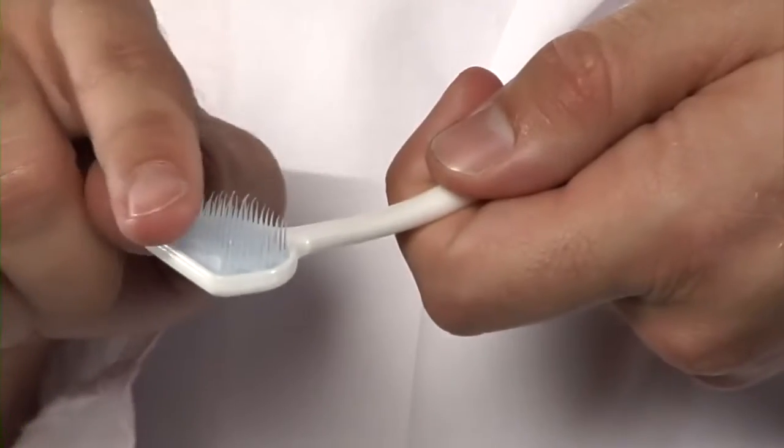This. The OraBrush. The soft bristles feel great on your tongue. You just go back and forth a few times, then go all the way back, pull it forward, and see what comes off.